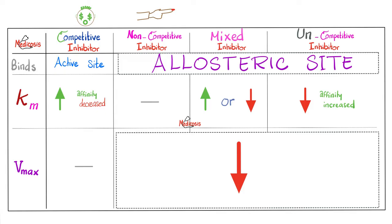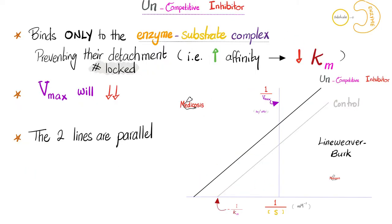Let's add uncompetitive inhibitors. Again, they bind to the allosteric site. Km is always decreasing because affinity goes up. And just like the ones before it, Vmax will go down. Competitive inhibitors are unique — they are the only inhibitors that bind the active site. Everything else binds allosteric. Competitive inhibitors are also the only inhibitors that do not decrease your Vmax. Every single other one is going to lower your Vmax.